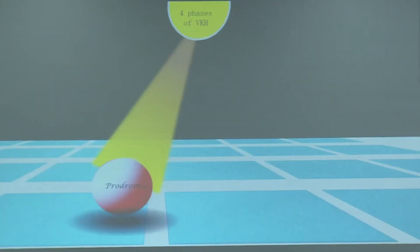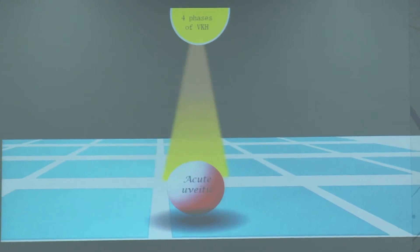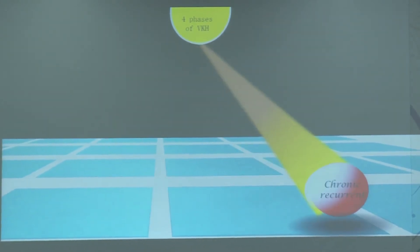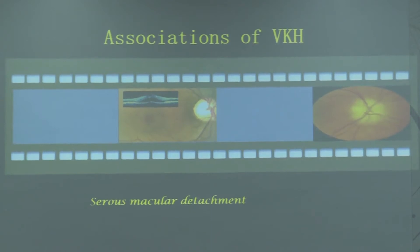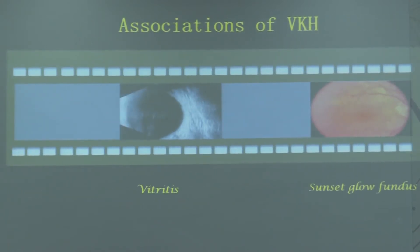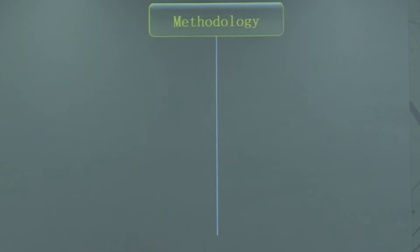The four phases of VKH are prodromal, acute uveitic, convalescent, and chronic recurrent. VKH can be associated with serous macular detachment, disc edema, vitreitis, as well as sunset glow fundus.